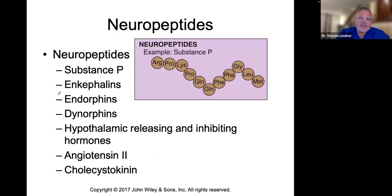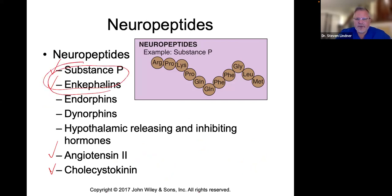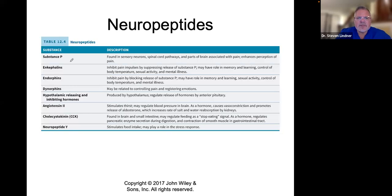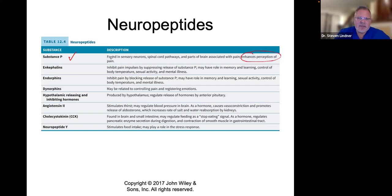The neuropeptides include substance P, enkephalins, angiotensin II, and cholecystokinin. Substance P is found in sensory neurons — the P stands for pain or perception of pain. It enhances pain perception.